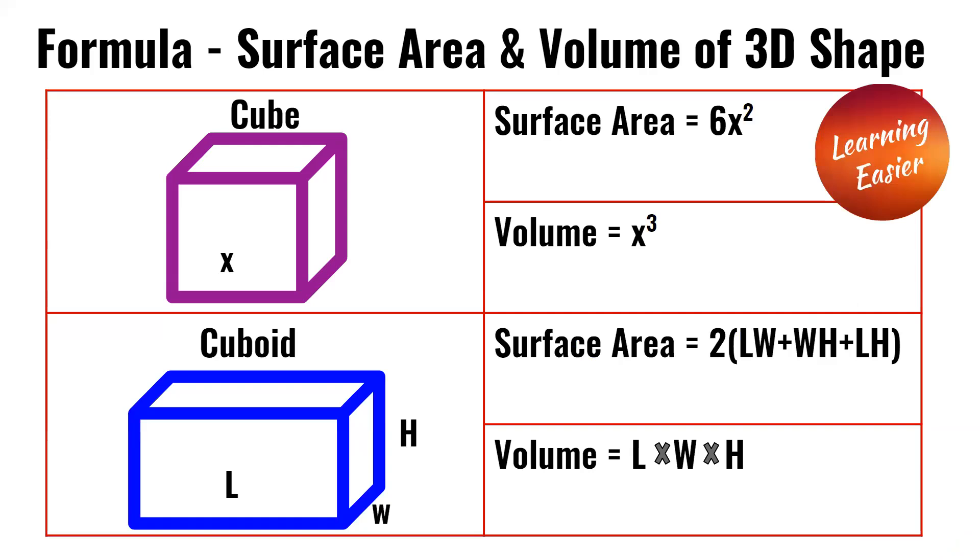For the cube, the surface area is equal to 6x squared, and the volume is equal to x cubed. For the cuboid, the surface area is equal to 2(LW + WH + LH), and the volume is L times W times H.